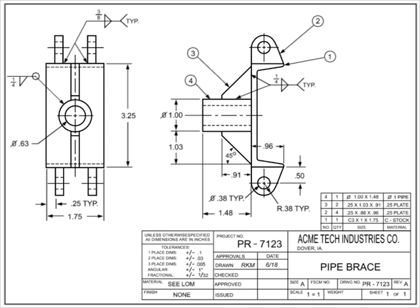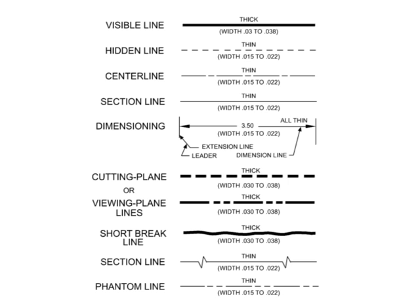Engineering drawings and blueprints are a type of graphical language that communicates ideas and information from the engineer who designed a part to the workers who will make it. The graphical images in the field of the drawing are generated using a variety of line styles.